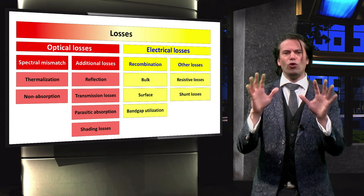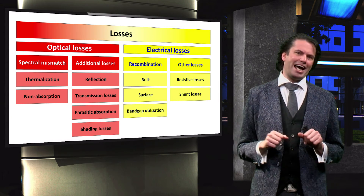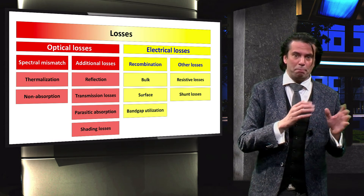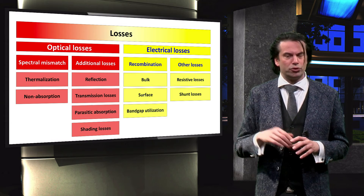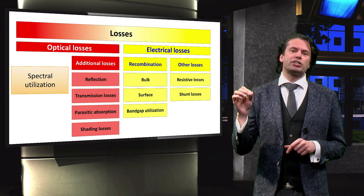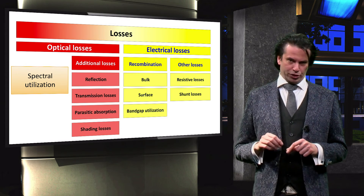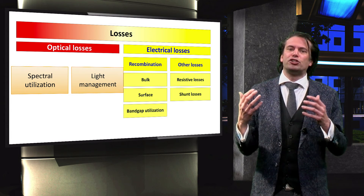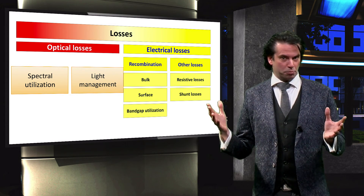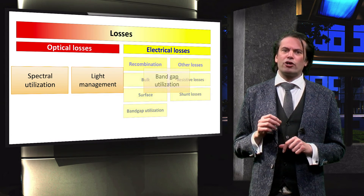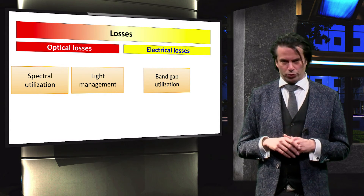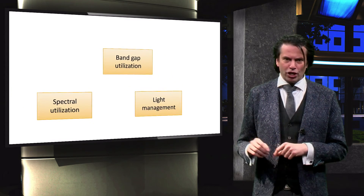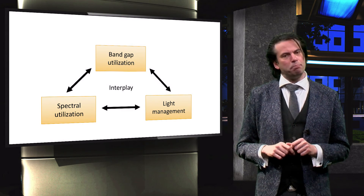This is the full overview of losses in any type of solar cell. We can translate these loss mechanisms into three major solar cell design rules. Losses due to spectral mismatch are the subject of spectral utilization. Additional optical losses are the main concern of light management. Electrical losses are considered in the band gap utilization design rules. Designing any type of solar cell involves a delicate interplay between these three pillars.